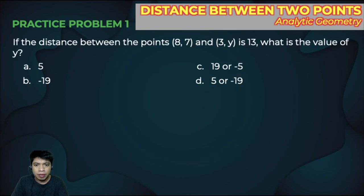Here's the first problem. If the distance between point 0 comma 87 and 3 comma y is 13, what is the value of y? If you want to solve this, please pause the video. After solving, play again. I will now reveal the answer. The answer is letter C, that is 19 or negative 5.